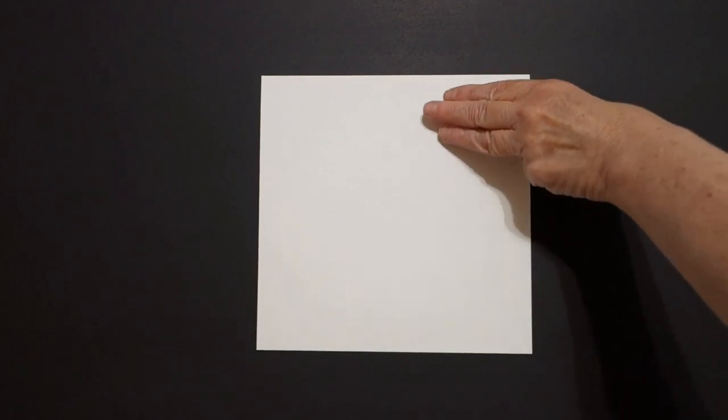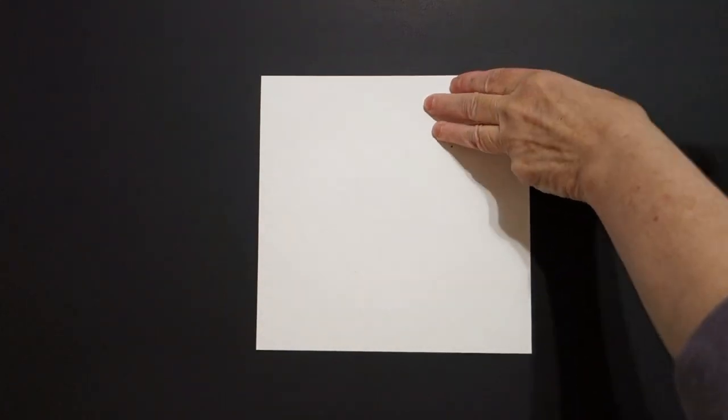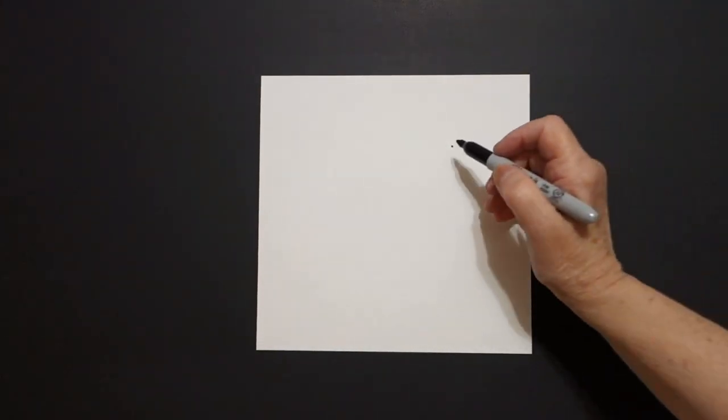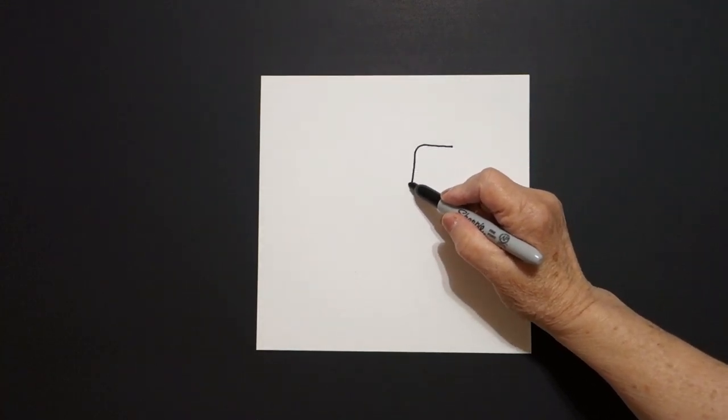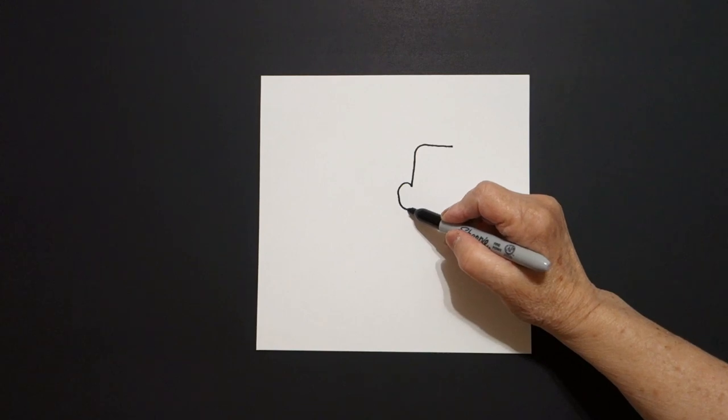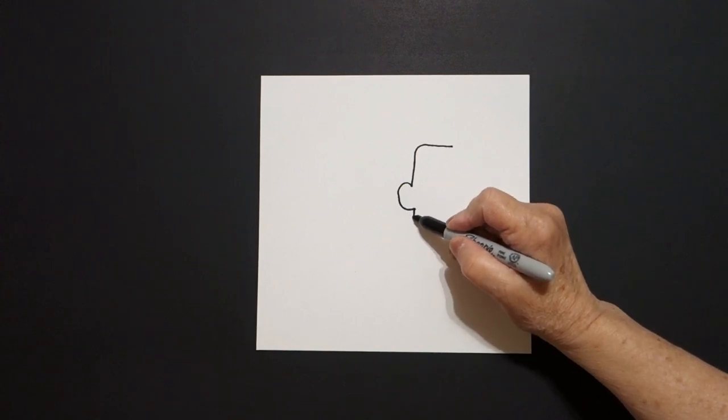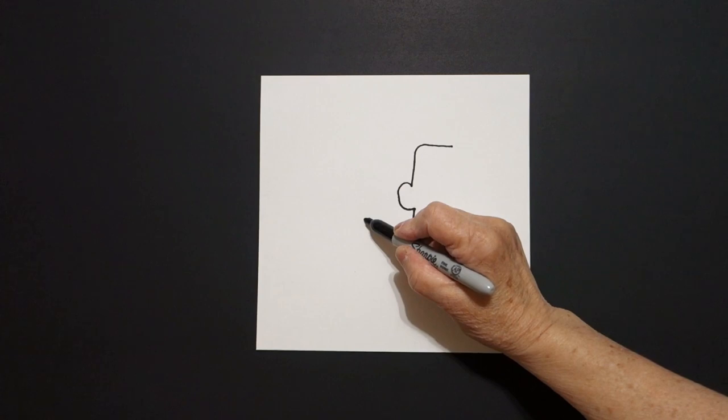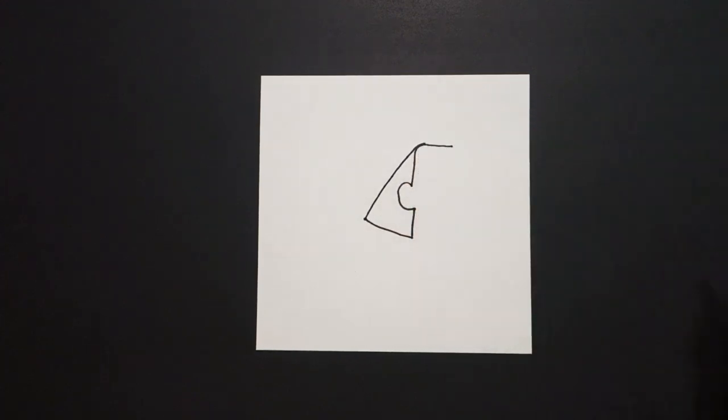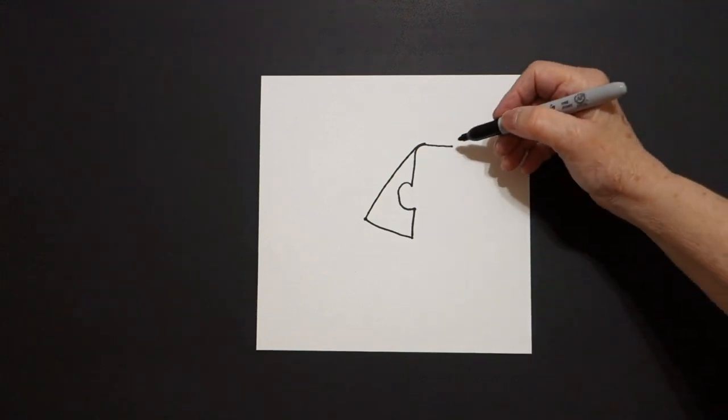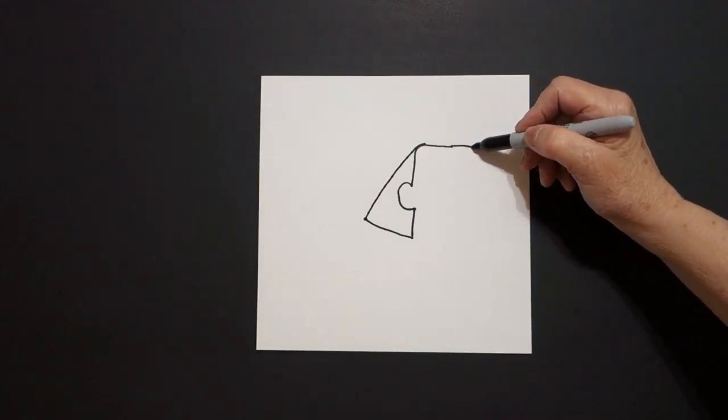Today's project is how to draw the Great Sphinx of Giza. I take three fingers over here towards the right and I put a dot. From that dot I'm going to draw straight line over, curve line down, curve line out, curve line in, straight line out, straight diagonal up, straight diagonal up, and connect.